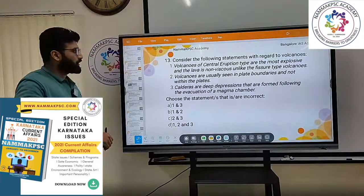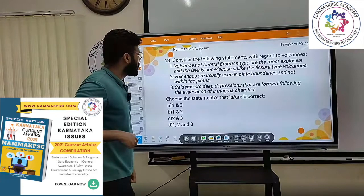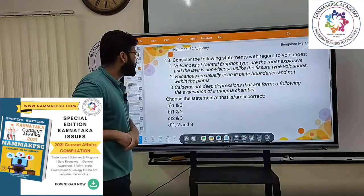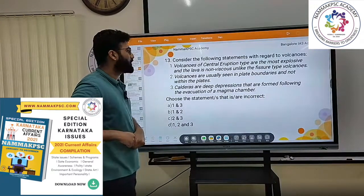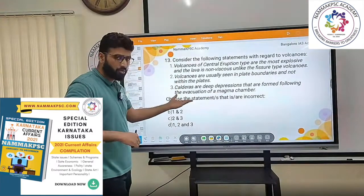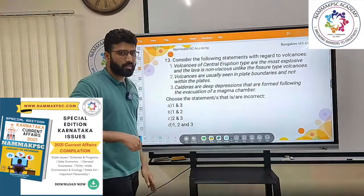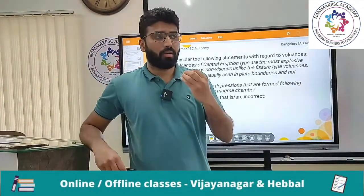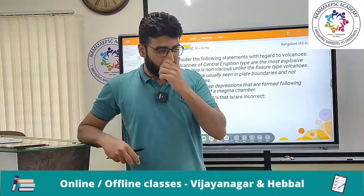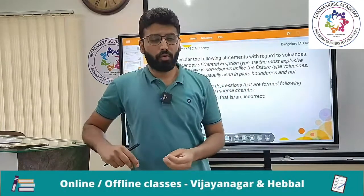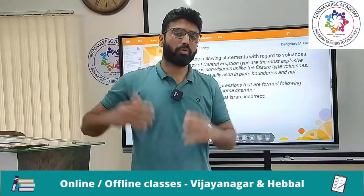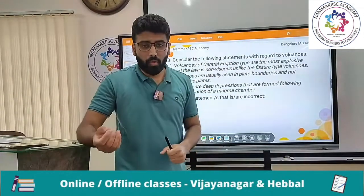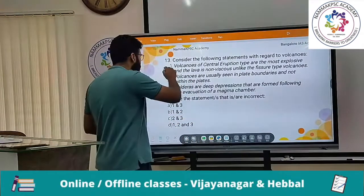Question 13: Consider the following statements with respect to volcanoes. The first statement says volcanoes of central eruption type are the most explosive and the lava is non-viscous, unlike fissure type volcanoes. This is obviously true. Your central eruption type volcanoes — like Stromboli, Vesuvian, or Pelean volcanic eruptions — have very viscous lava which is not able to flow out easily, resulting in explosive volcanic eruptions. So the first statement is correct.